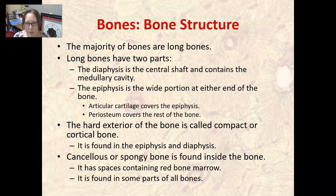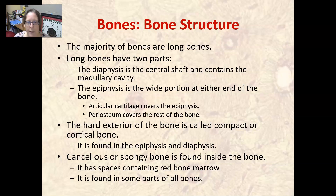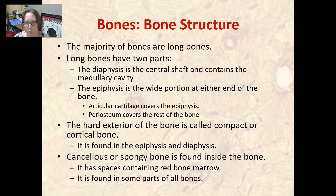The majority of bones in your body are long bones. Long bones have two parts: the diaphysis and the epiphysis. The diaphysis is the central shaft containing the medullary cavity where bone marrow is found. The epiphysis — think 'top' — is the wider portion at either end of the bone, covered by articular cartilage to allow for smooth bone movement.